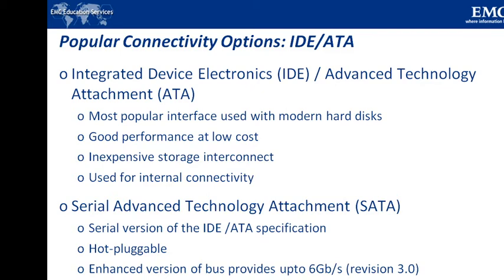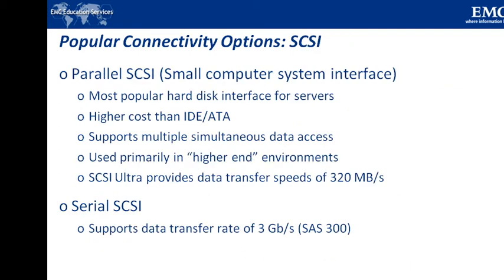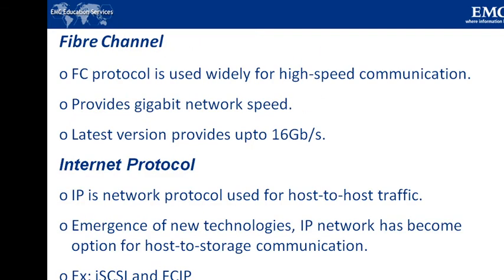The next protocol is SCSI and Serial SCSI. SCSI has emerged as a preferred connectivity protocol in high-end computers. This protocol supports parallel transmission and offers improved performance, scalability, and compatibility compared to ATA. However, the high cost associated with SCSI limits its popularity among home or personal desktop users. Over the years, SCSI has been enhanced and now includes a wide variety of related technologies and standards. SCSI supports up to 16 devices on a single bus and provides data transfer rates up to 640 MB per second for the Ultra 640 version.